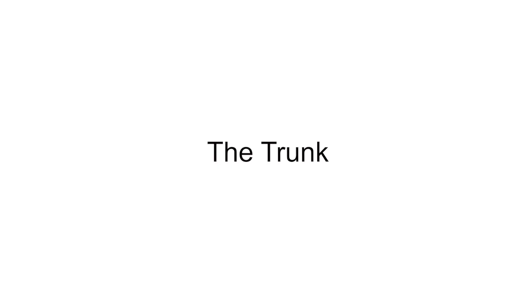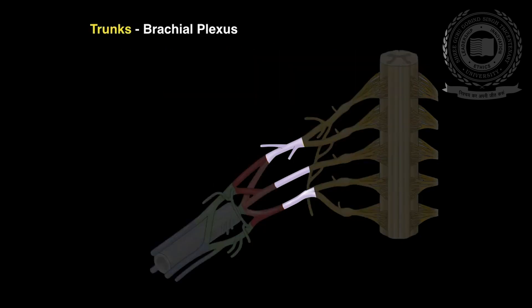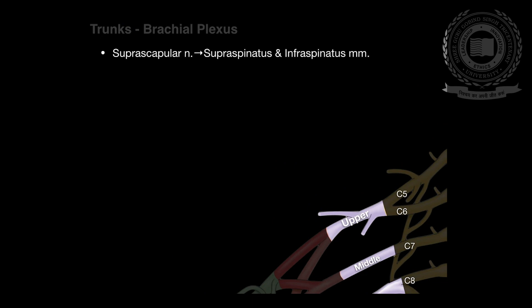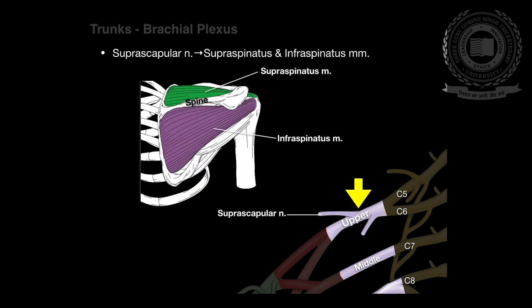The trunks: shortly after emerging from the intervertebral foramina, the five roots unite to form three trunks. The trunks of the brachial plexus pass between the anterior and middle scalene muscles over the clavicular bone. The ventral rami of C5 and C6 unite to form the upper trunk, C7 continues to form the middle trunk, and the ventral rami of C8 and T1 unite to form the lower trunk. The upper trunk gives a branch called the suprascapular nerve, which supplies the supraspinatus and infraspinatus muscles.